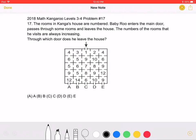Let's start at the room marked 1, because that is the first room Baby Roo will enter when he enters the house. Next, we can go to the 2, then the 4, 6, 9, 12.